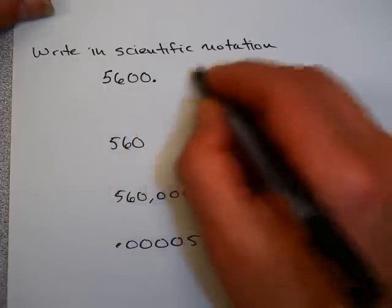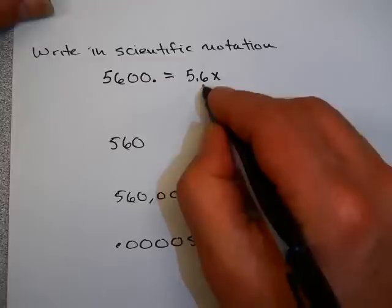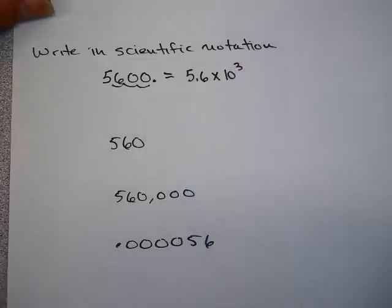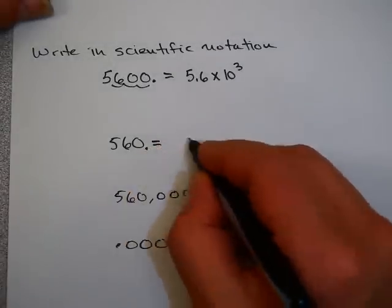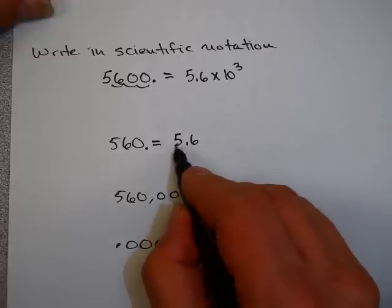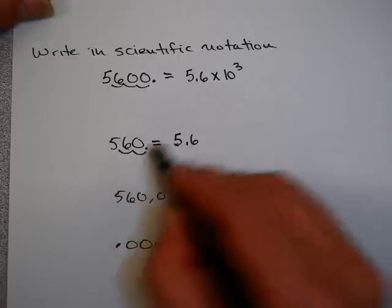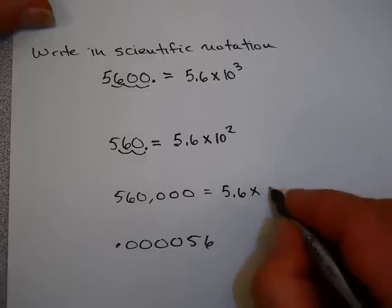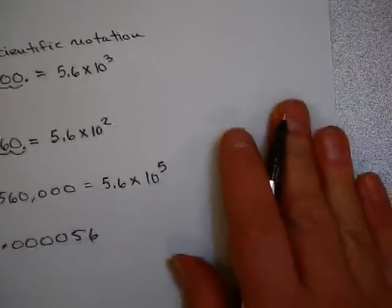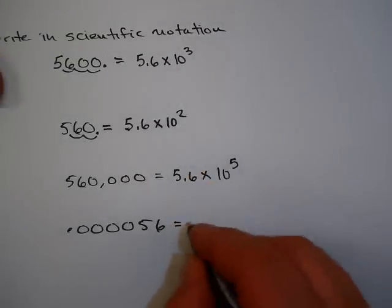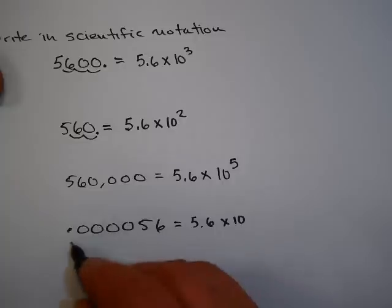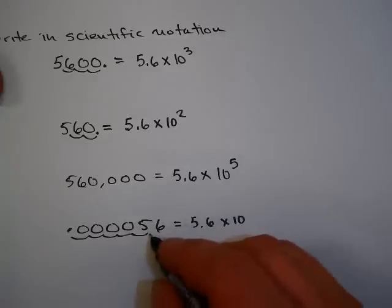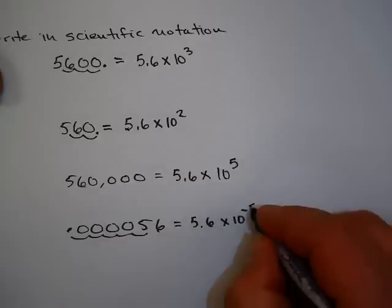Okay. 5,600 — the decimal point is at the end, and I want it to be 5.6. Since 5.6 is smaller, I'm going to move the decimal point 1, 2, 3 times, giving me 5.6 times 10 to the 3rd. For 560, I want that to be 5.6, so I move the decimal point 1, 2 times — that's 5.6 times 10 to the 2nd. The next one is 5.6 times 10 to the 5th. And the last one — to make 5.6 into a much smaller number — I need a negative exponent: moving the decimal 1, 2, 3, 4, 5 times gives 5.6 times 10 to the negative 5.